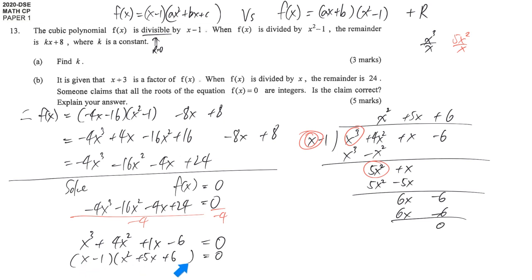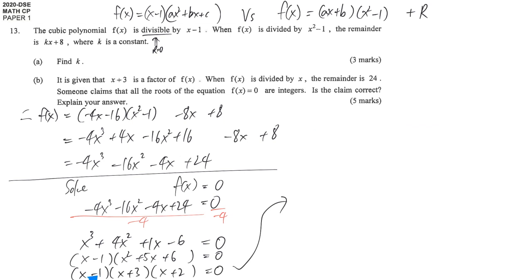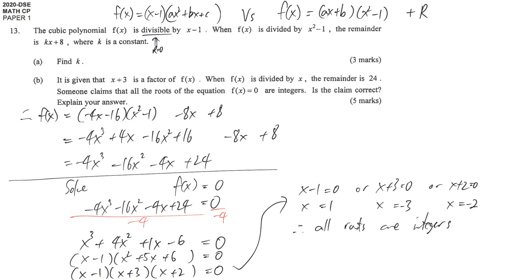Either factor can equal 0. We're also given that x plus 3 is a factor, so the quadratic factors as (x plus 3)(x plus 2). By the zero product rule, at least one factor equals zero, giving roots x equals 1, x equals negative 3, and x equals negative 2. All roots are integers, which confirms the claim is correct.